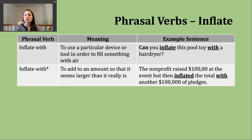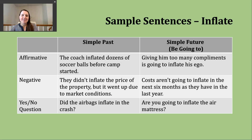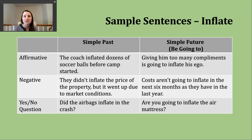Now let's use our verb of the day in a couple of different verb tenses — the simple past tense and the simple future using be going to. We use the simple past tense to talk about an action completed in the past at some known point in time; that action is done with no connection to the present. In the affirmative, the structure is subject plus the -ed form of the verb. For example: the coach inflated dozens of soccer balls before camp started.